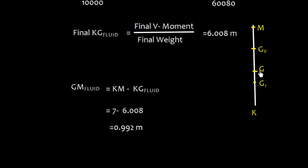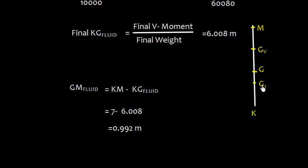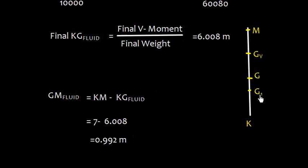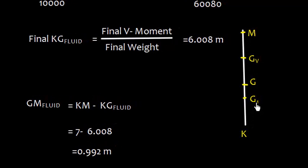I can explain this here. This is K and this is G, that is center of gravity, which is 6 meter. Since we shifted or we transferred the weight downwards, so GG1 has come down. This is the new center of gravity.